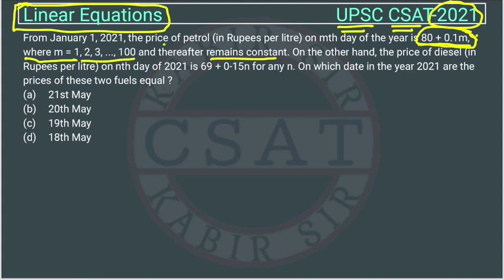On the other hand, the price of diesel in rupees per liter on the nth day of 2021 is determined by this equation — 0.15n — for any n.